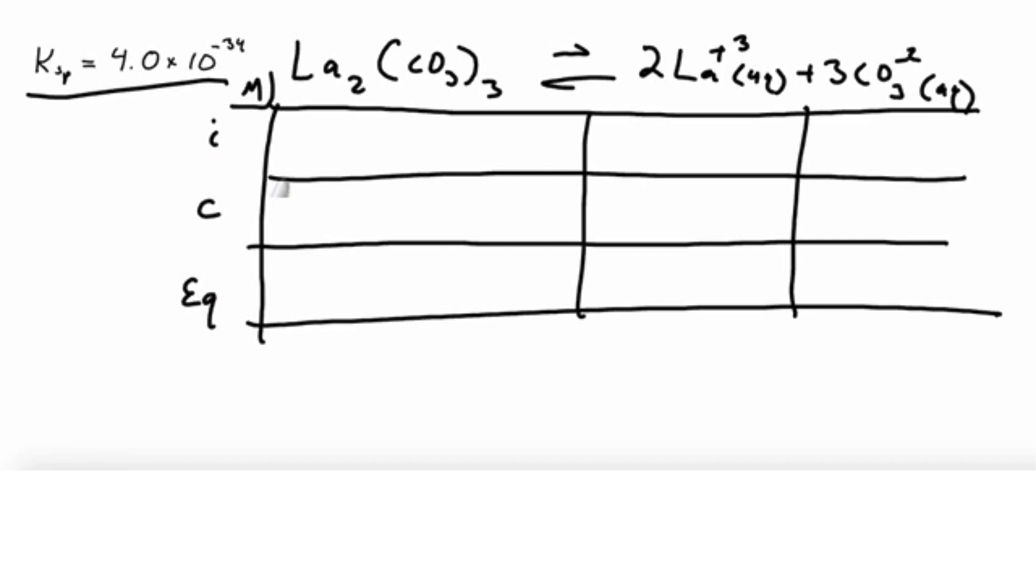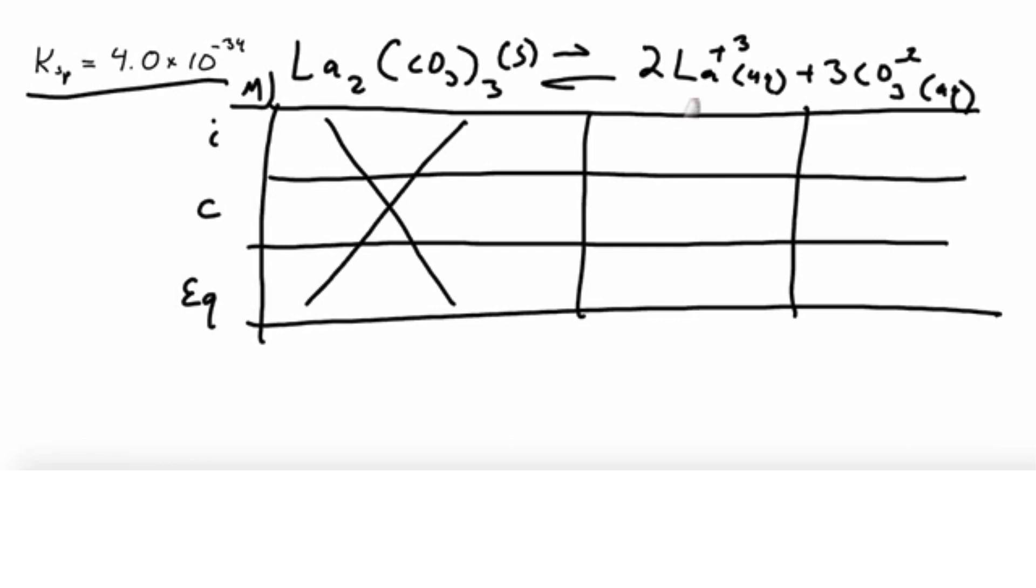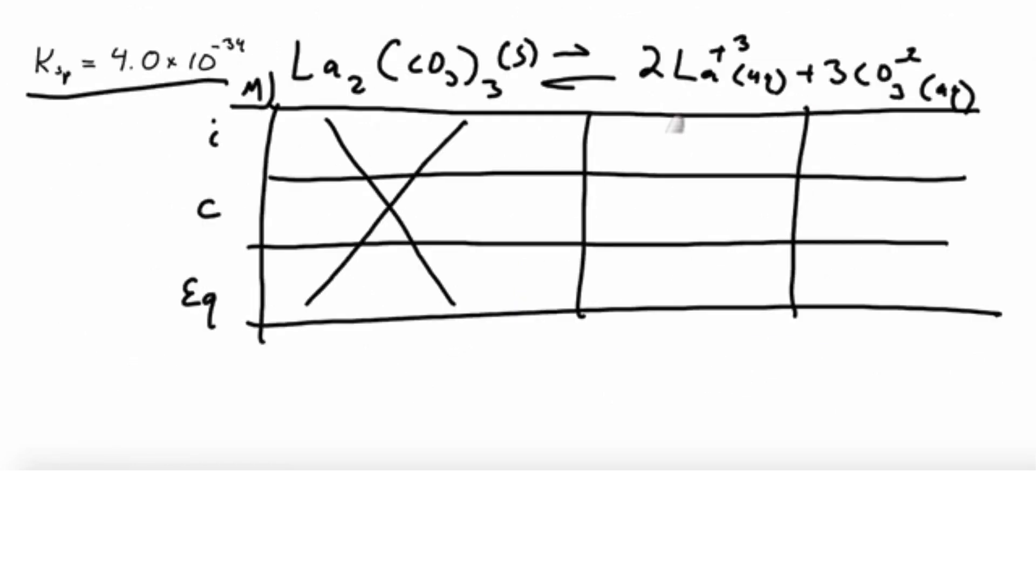So the initial concentrations. First of all, we want to talk about this is a solid, the lanthanum carbonate. So we're not going to be plugging this into our equilibrium constant expression, so you can just cross it off. We know that that's going to end up being plugged in as a one, or really just not plugged in at all. So let's look at these concentrations. Our initial concentration of lanthanum, well, if we go back to our problem statement, it says that we dissolved it in pure water, so there wasn't any lanthanum or carbonate at the very start. So we can write in zero there.